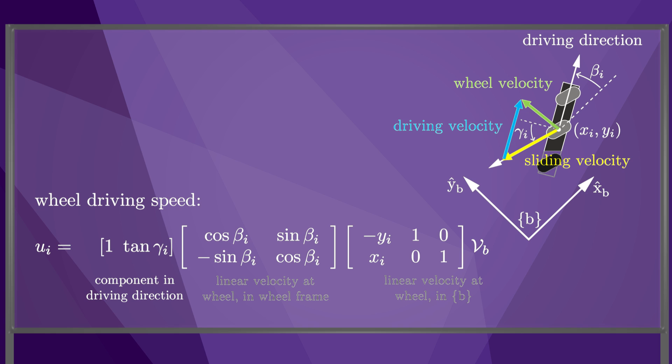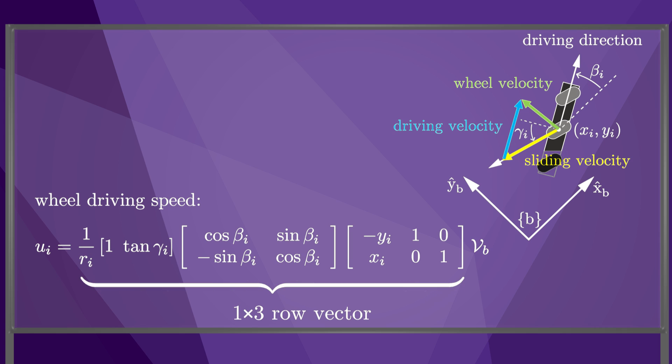Finally, to convert the linear driving velocity to a rotational speed for the wheel, we divide by ri, where ri is the radius of the wheel. The final result is a 1 by 3 row vector times the twist vB. We call this row vector Hi, and more specifically Hi for reasons that will become clear shortly.